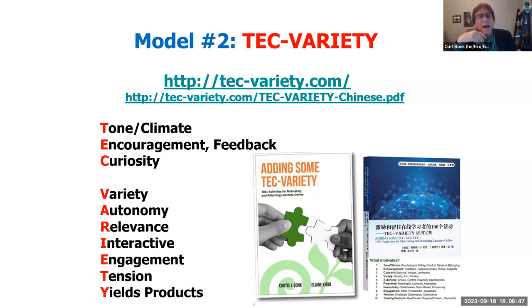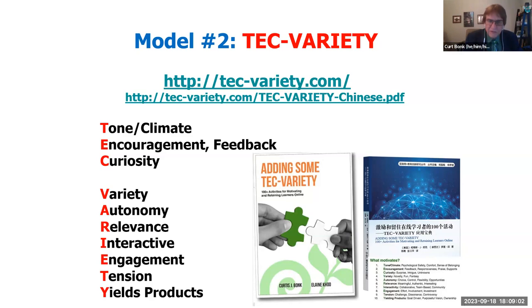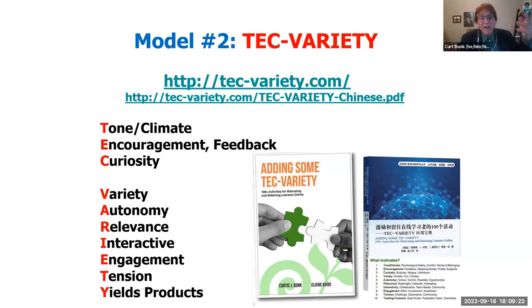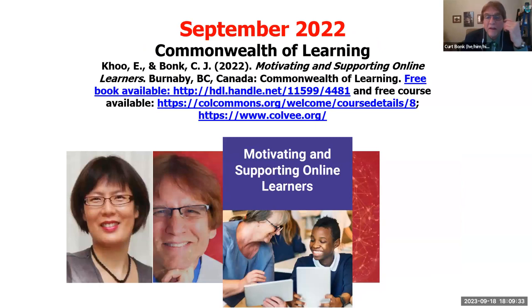This semester I'm going to come back to my free book, the Tech Variety book, which stands for 10 Motivational Principles. This book is available in Chinese and in English to download — it came out in 2014. It's been downloaded hundreds of thousands of times and the counter broke seven years ago, so I don't know the actual number. There's a new version that came out a year ago. In the book, we have 10 activities for autonomy, 10 for interactivity, 10 for tone and climate — each one of those motivational principles.